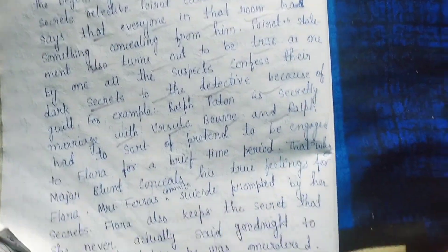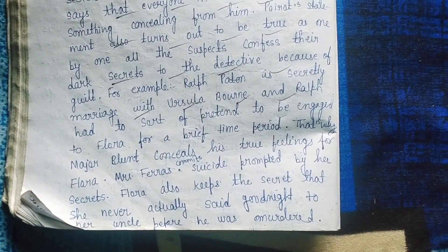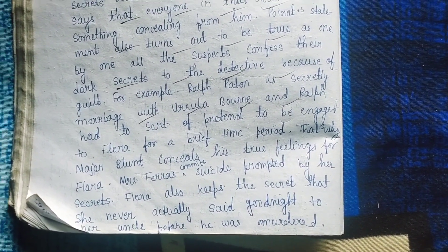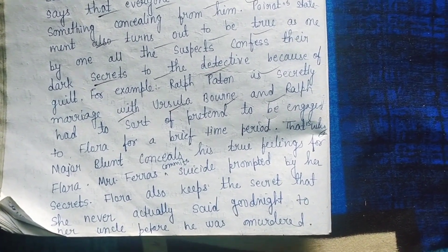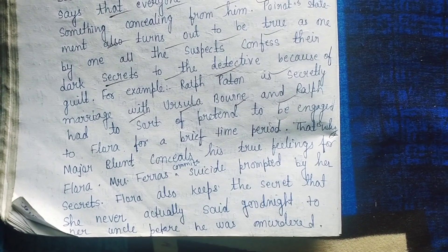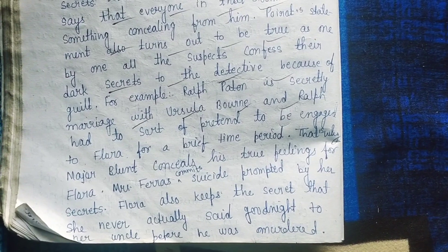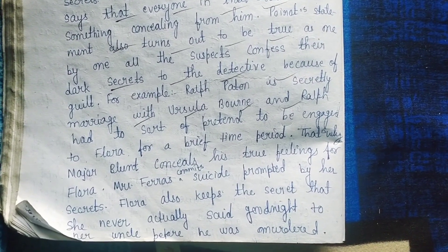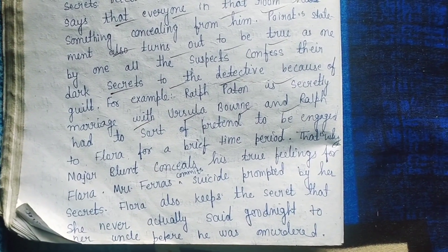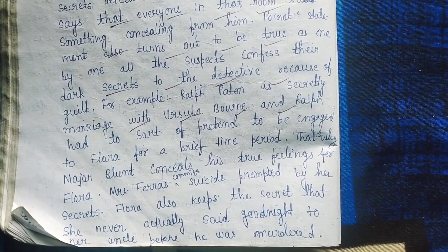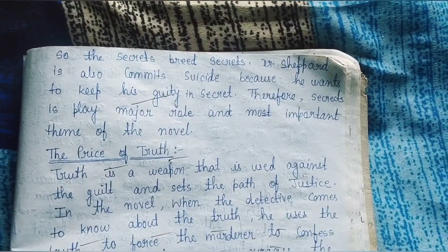For example, Ralph Patton is secretly married with Ursula Borne, and Ralph had to pretend to be engaged to Flora for a brief time period. That is why Major Blunt concealed his true feelings for Flora. Mrs. Ferris commits suicide prompted by her secrets. Flora also keeps the secret that she never actually said goodnight to her uncle before he was murdered. So the secrets breed secrets.